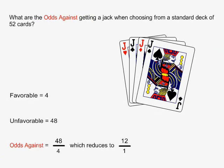In this example, what are the odds against getting a jack when choosing from a standard deck of 52 cards? There are 4 jacks in a standard deck, so the number of favorable cases is equal to 4. There are 48 cards which are not jacks in the standard deck, so the number of unfavorable cases is equal to 48.